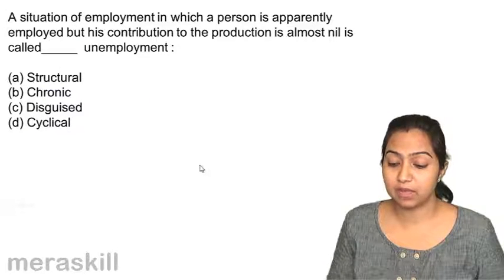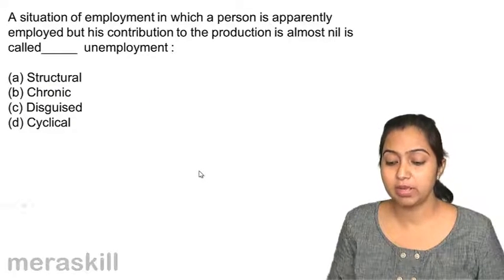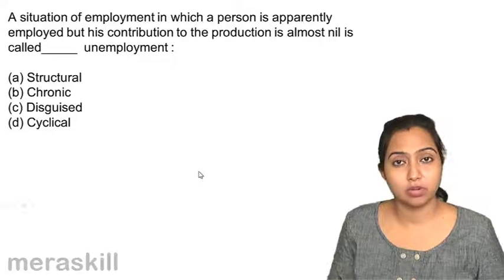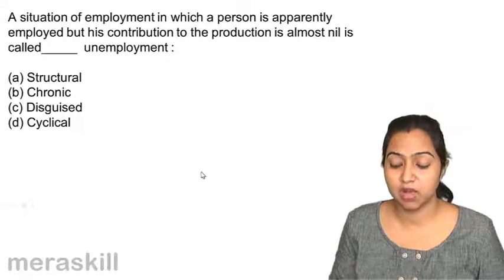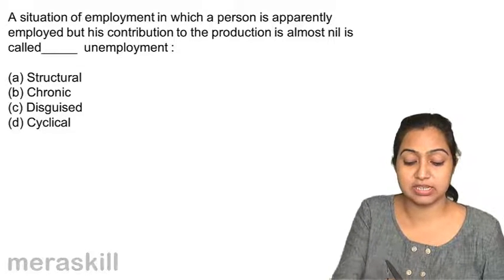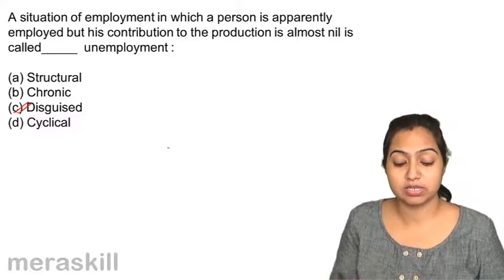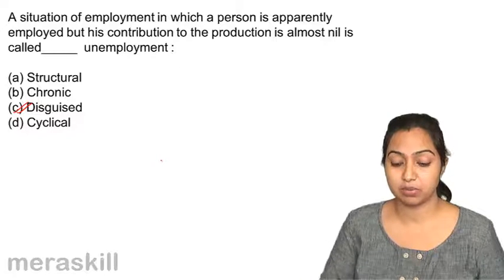A situation of employment in which a person is apparently employed but their contribution to production is almost nil — their marginal productivity is nil — where you appear to be employed but you are not, is called disguised unemployment.